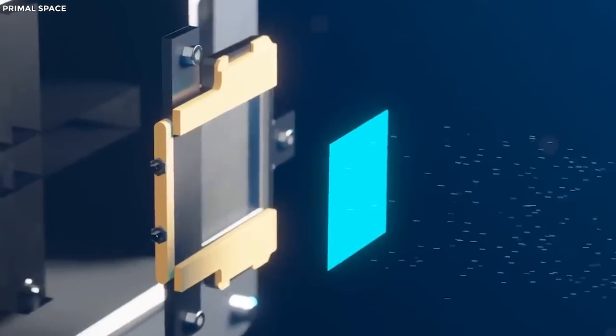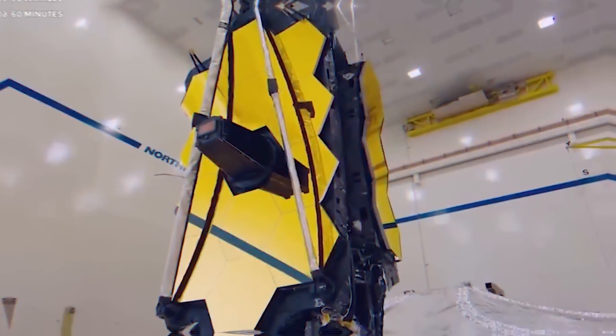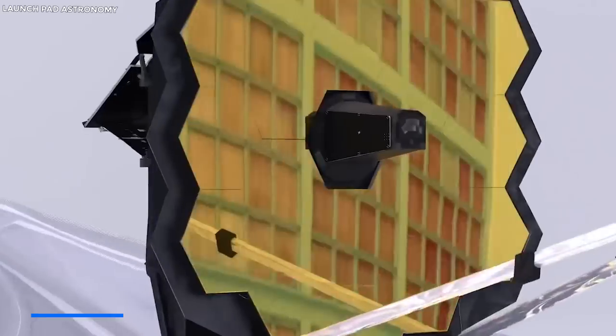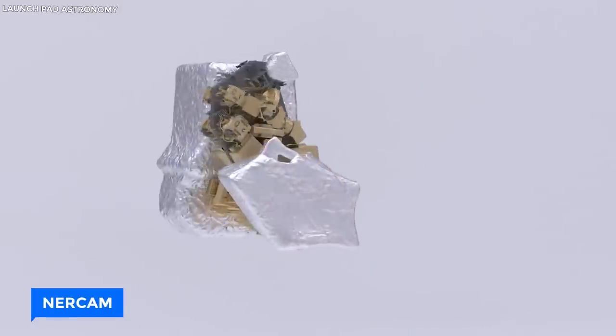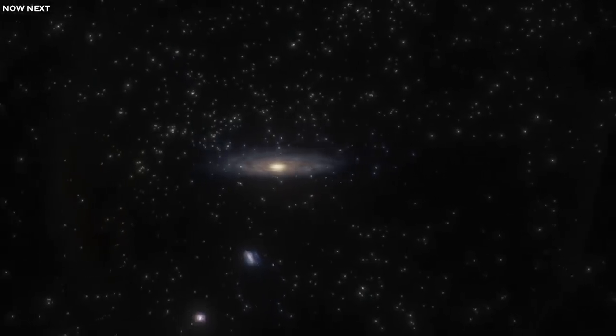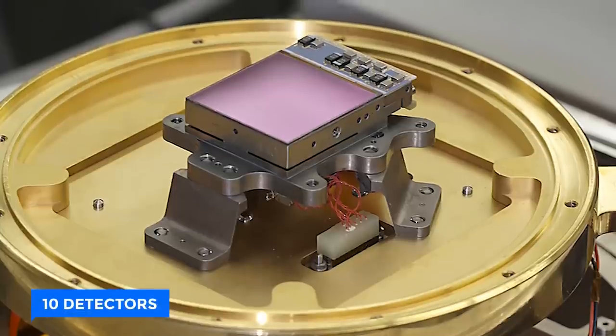Here, light transforms into electrical voltage. The telescope has four tools. NIRCam, its main camera, detects light from early stars and galaxies in near-infrared using 10 detectors.